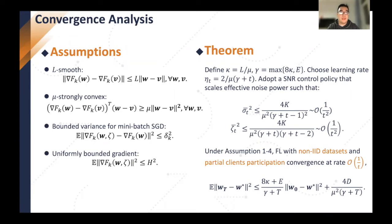To theoretically analyze the convergence of federated learning over noisy channels, we first make four assumptions on the local loss function. These four assumptions are widely accepted in state-of-the-art papers: all local loss functions are L-smooth and mu-strongly convex, have bounded variance for minibatch SGD, and have uniformly bounded gradients. Under these four assumptions, we prove that when using a diminishing learning rate and adopting an SNR control policy that scales effective noise power at a rate of 1/T², federated learning converges at a rate of 1/T with non-IID datasets and partial client participation. This shows that allocating equal transmitted power across all communication rounds under a power budget P may not be optimal.